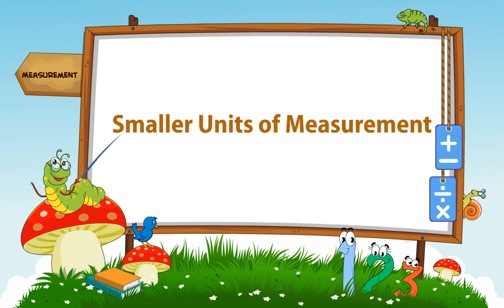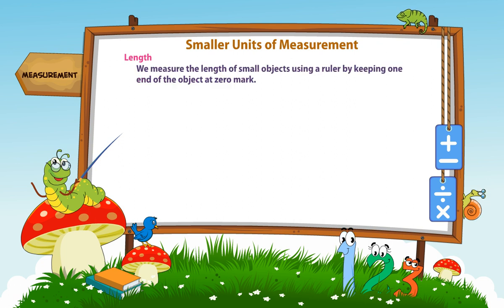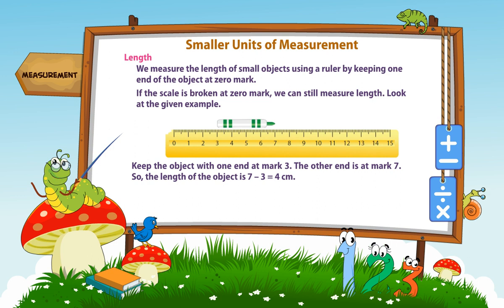Smaller units of measurement: Length. We measure the length of small objects using a ruler by keeping one end of the object at zero mark. If the scale is broken at zero mark, we can still measure length. Look at the given example: keep the object with one end at mark 3, and the other end is at mark 7. So, the length of the object is 7 minus 3, equal to 4 cm.